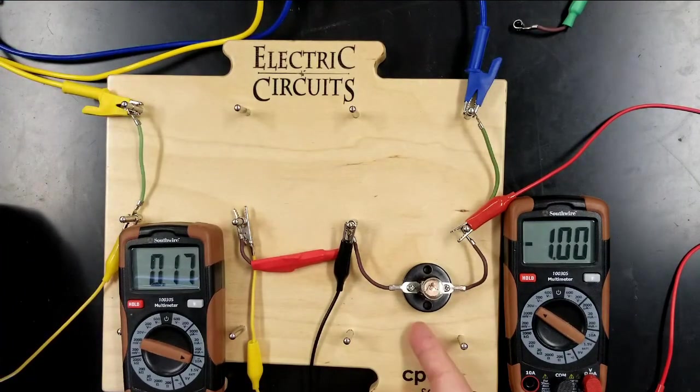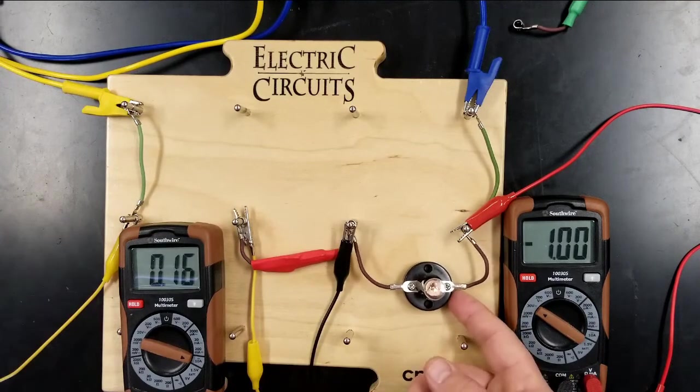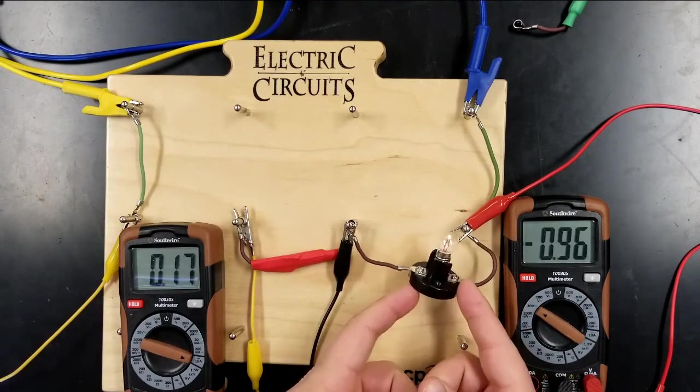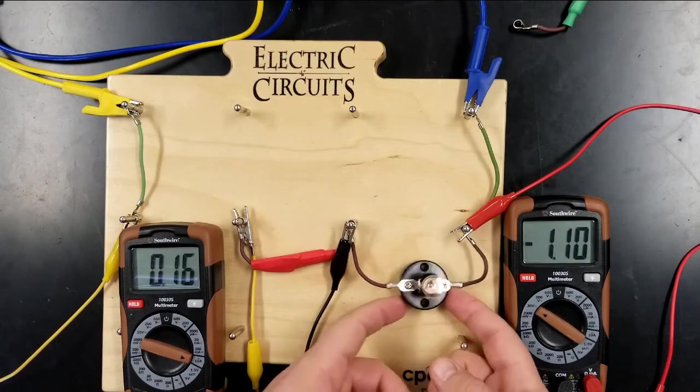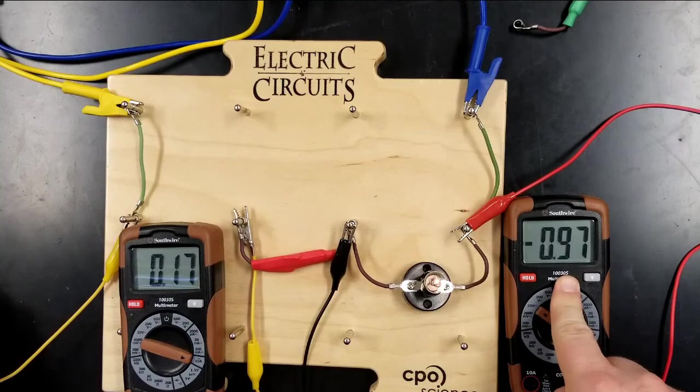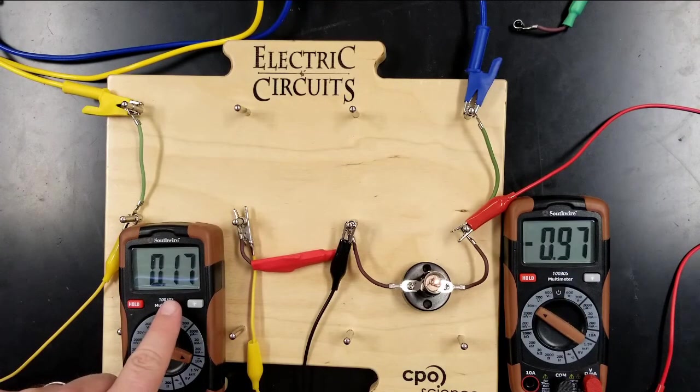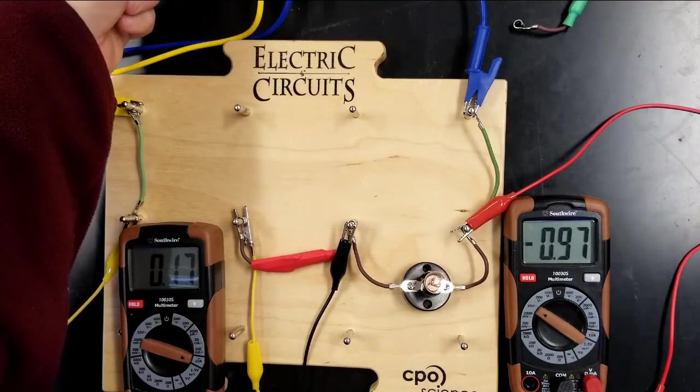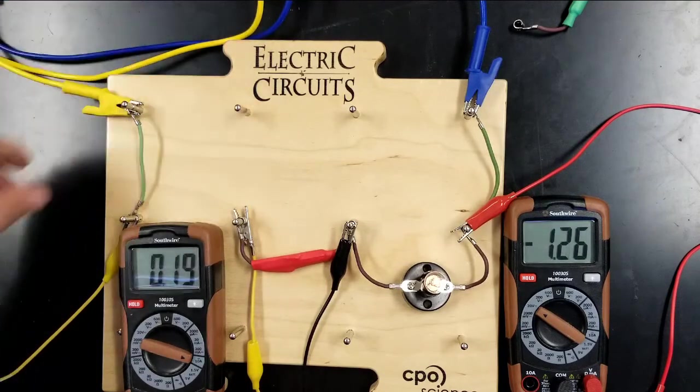So now it's glowing bright enough to actually notice. And that's at a voltage of just under one volt, so 0.96. And the current through it is 0.17. We're going to keep clicking our battery emulator up.